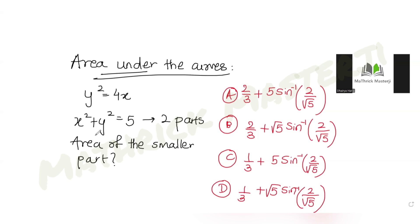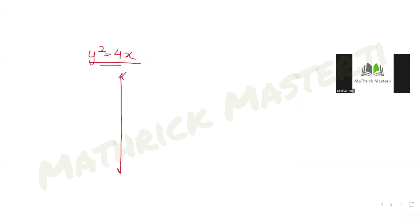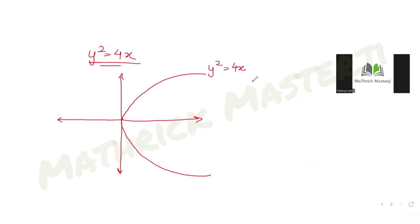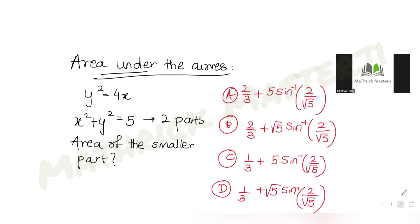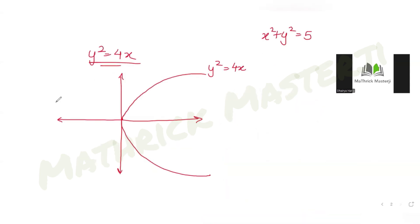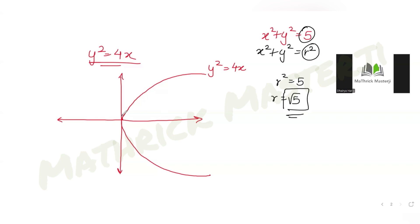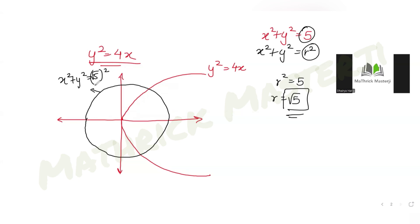We have been given the parabola y² = 4x, which is a general equation of a parabola symmetric about the x-axis. The other equation is x² + y² = 5, which is the equation of a circle. Comparing with x² + y² = r², we get r² = 5, so the radius is √5.